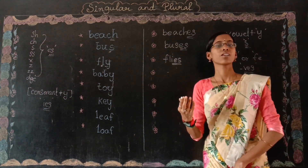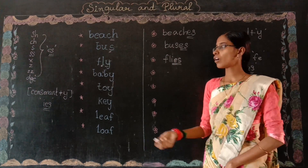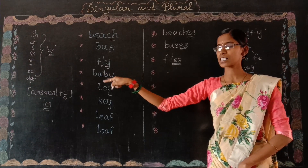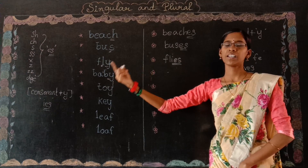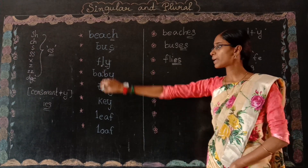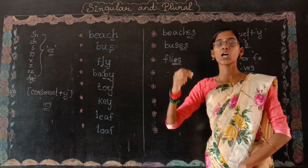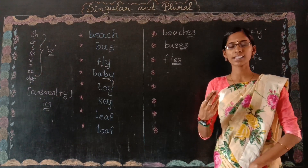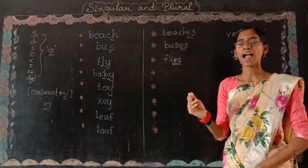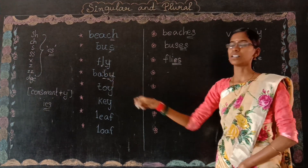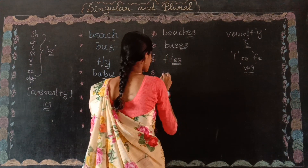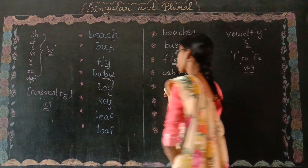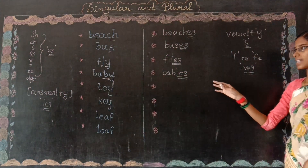Coming to the next one: 'baby.' We love to play with baby. It ends with Y, and before the Y is B, which is a consonant. So we apply our second rule — consonant plus Y: remove Y and add IES. In singular we say baby, and in plural we say babies.